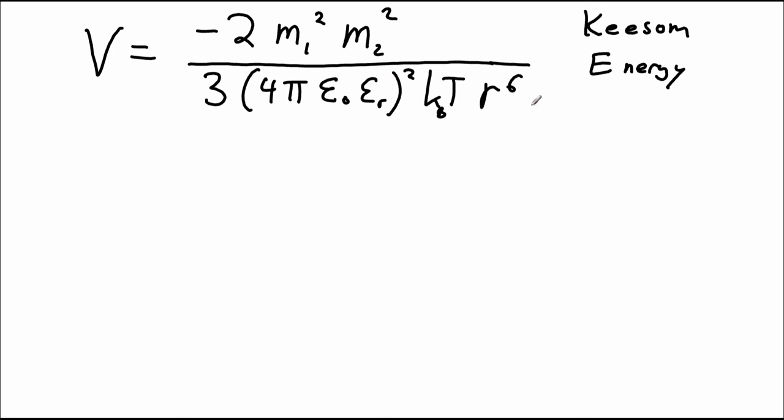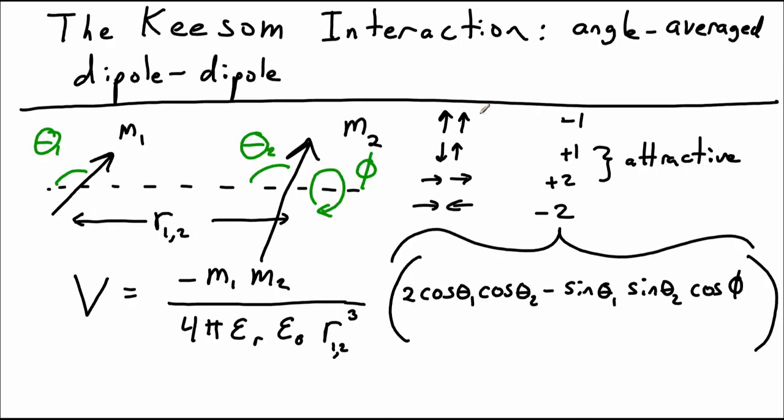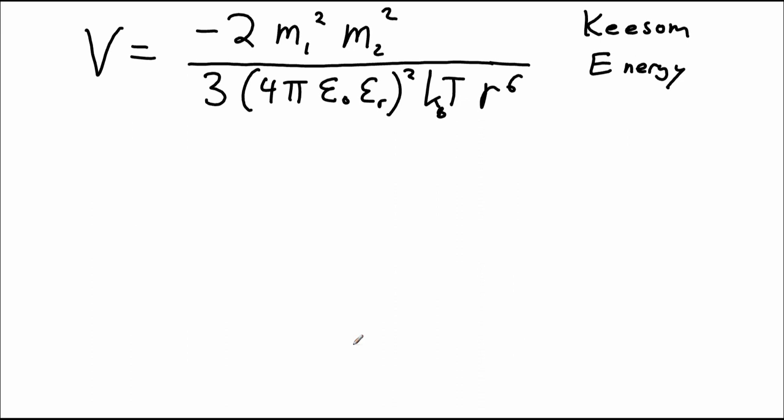In a similar argument, the exponent has become doubled. So in the original equation, we can see that this was r to the third for a particular set of dipoles at a particular set of angles. When we look at the angle average expression, it's now not r to the third, but r to the sixth. And that's true whenever we do angle averaging.